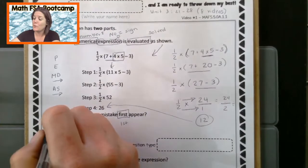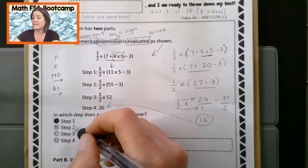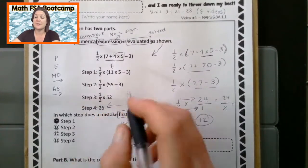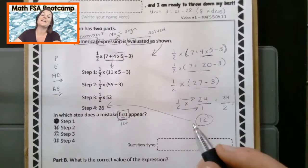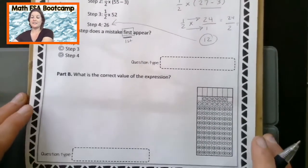All right. So right there is the very first mistake that happens. They did seven plus four first, and that's not right. They should have done four times five. So in which step does a mistake first appear? Step number one. Now there are also mistakes in step number two, step number three, and step number four, but it says, where does it first appear? That's right.